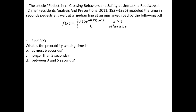The article 'Pedestrian Crossing Behaviors and Safety at Unmarked Roadways in China' modeled the time in seconds that pedestrians wait at a median line at an unmarked road by the following PDF: 0.15e to the negative 0.15 times (x minus 1), where x is greater than or equal to 1.